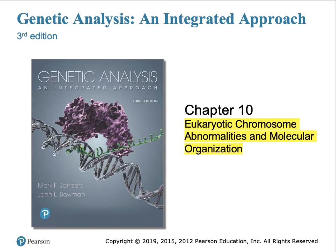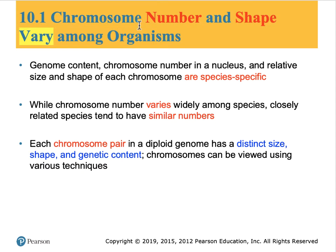Chapter 10: Eukaryotic Chromosome Abnormalities and Molecular Organization. This video tackles a comprehensive chapter with many sections, each dealing with different aspects of chromosomal structure and abnormalities. The number of chromosomes, as well as their shape, can vary enormously between organisms, with no clear rule as to the number a particular species should have. Humans and chimpanzees have very similar, though not identical, chromosome numbers.